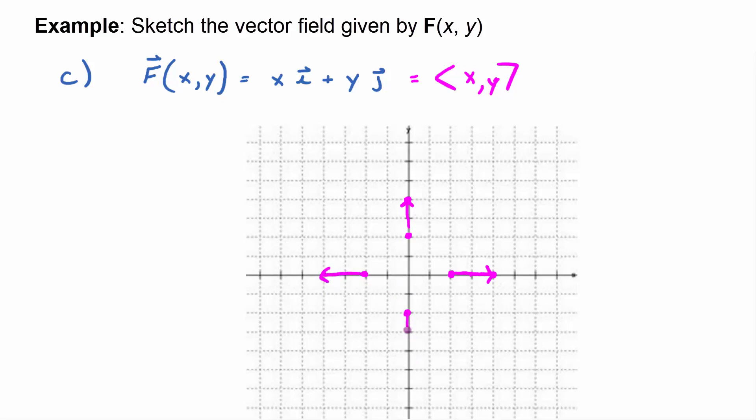And it ends up that this is the vector field of vectors that point radially outward. So along any circle of the same radius, in this case along any circle of radius 2, you're going to get vectors that point outward.